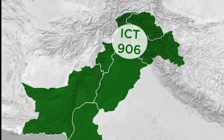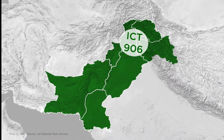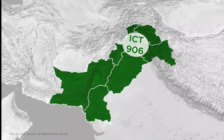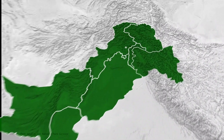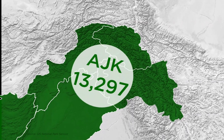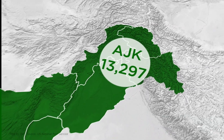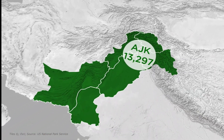Islamabad's total area is 906 square kilometers. Azad Jammu and Kashmir's area is 13,219 square kilometers.